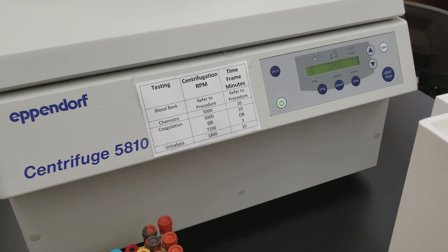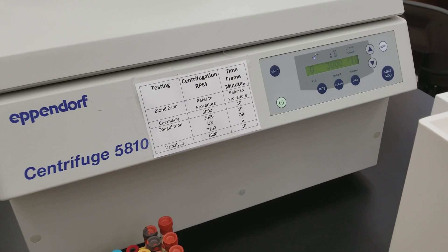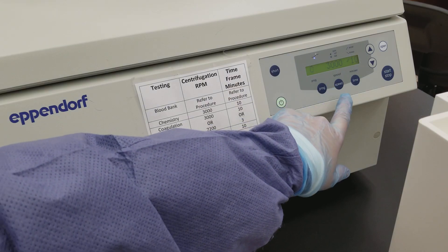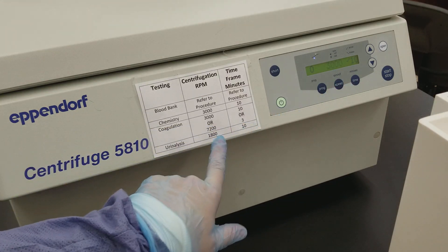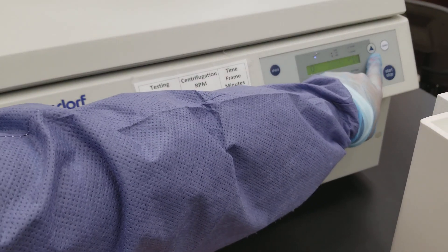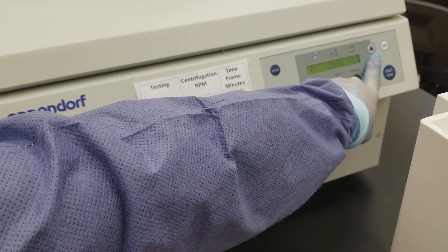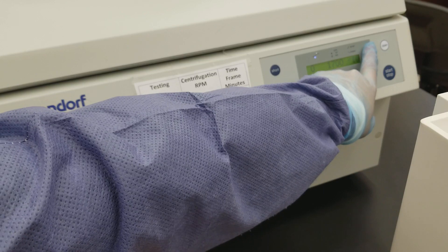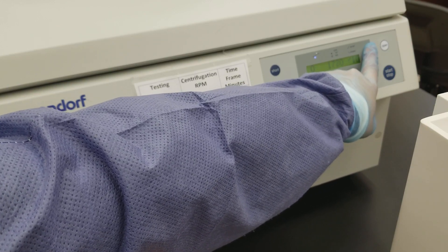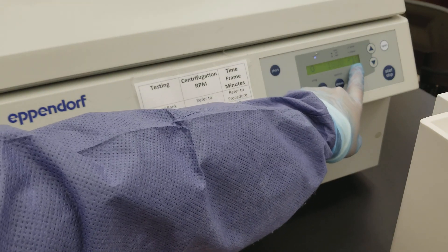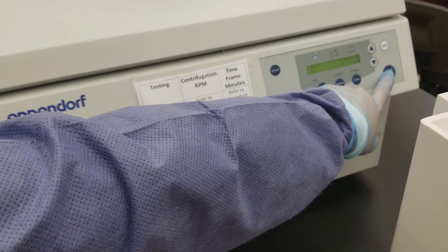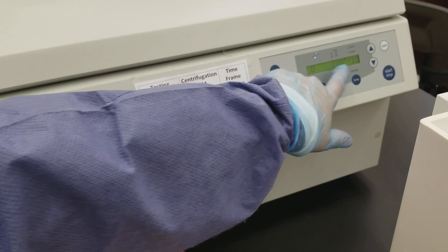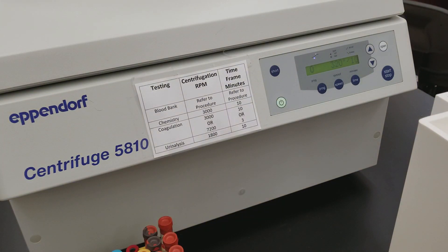So now what we're going to do is we're going to program our urinalysis setting. So we're going to go with speed. Speed is going to be 1,800 rpms. We can just press the down button. Goes up by 10s. So 1,800. And then we're already at 10 minutes. So we can go ahead and press start. And it's going up and it's starting. All right, I'll get back to you when it's done.